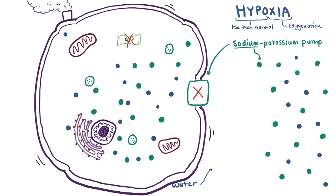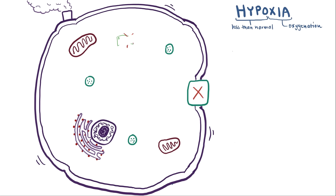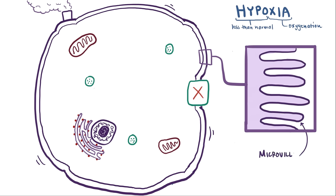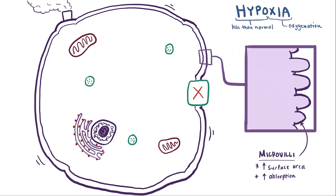And when the cell swells up, a couple things start to happen. First, usually you have these really tiny microvilli on the cell's membrane, which sort of look like little fingers, that help increase the cell's surface area and therefore help the cell absorb more things. When the cell swells up and gets all bloated, the water sort of fills these little fingers and reduces the surface area, which makes it harder to absorb molecules since there's less surface area, right?